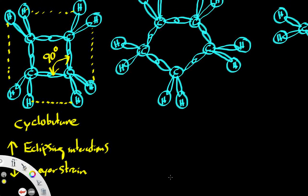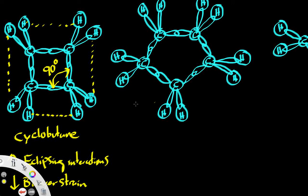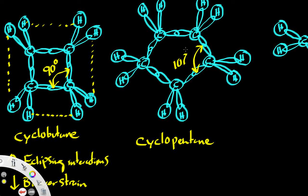Now with cyclopentane we have an internal angle of approximately one hundred and eight degrees. That is very close to one hundred and nine point five, so we will have really hardly any Baeyer strain at all. But we will have much more eclipsing interactions than we had in both previous examples.